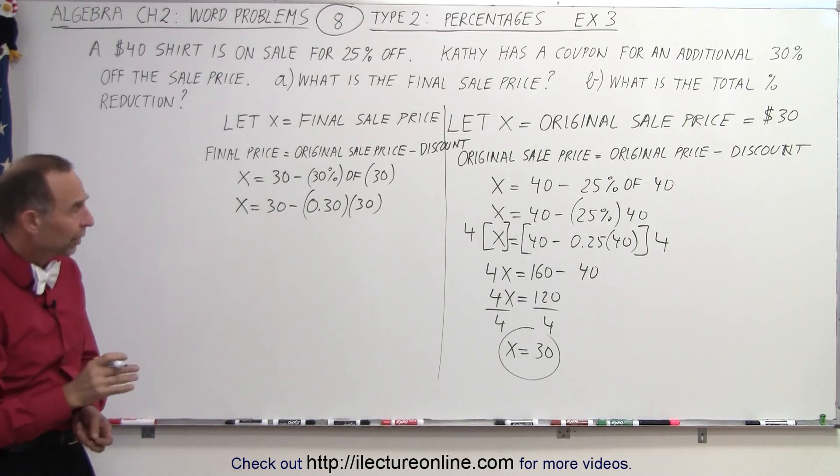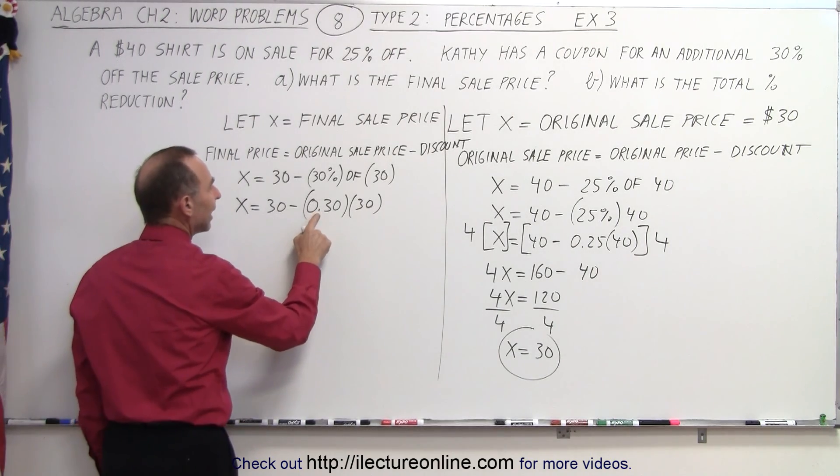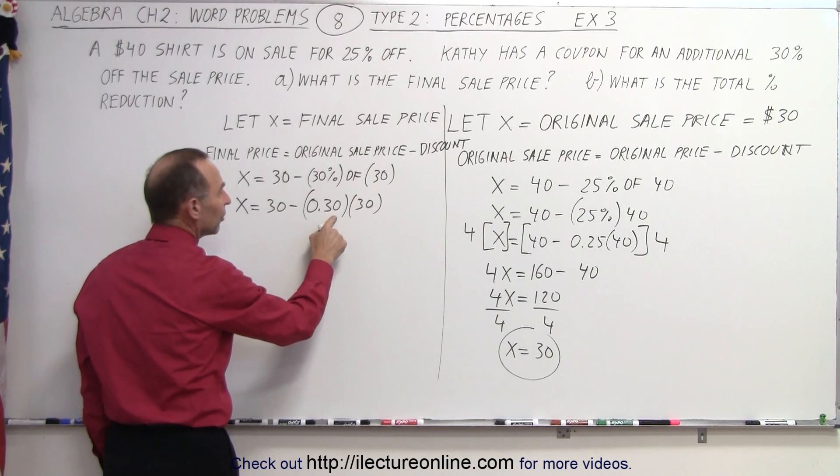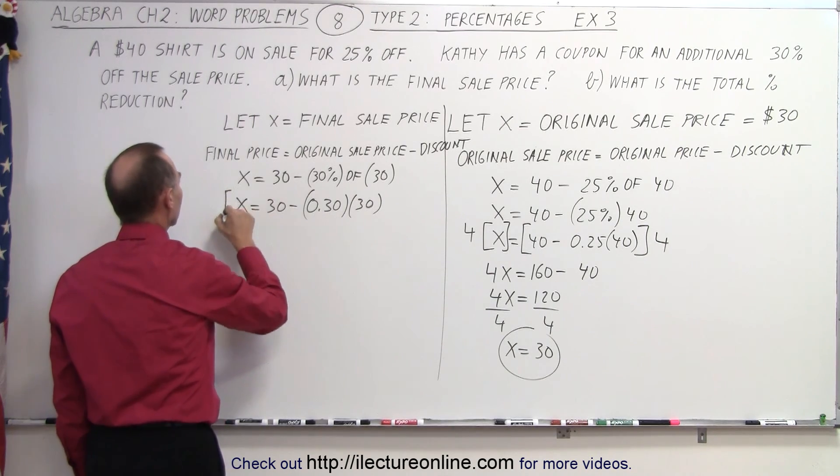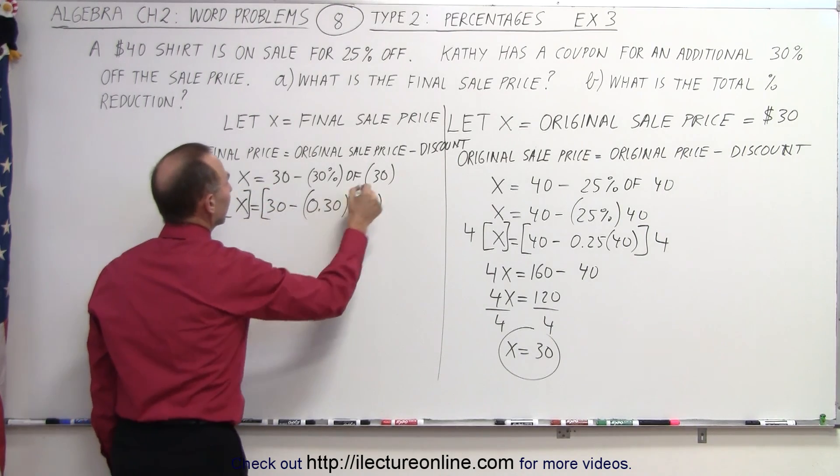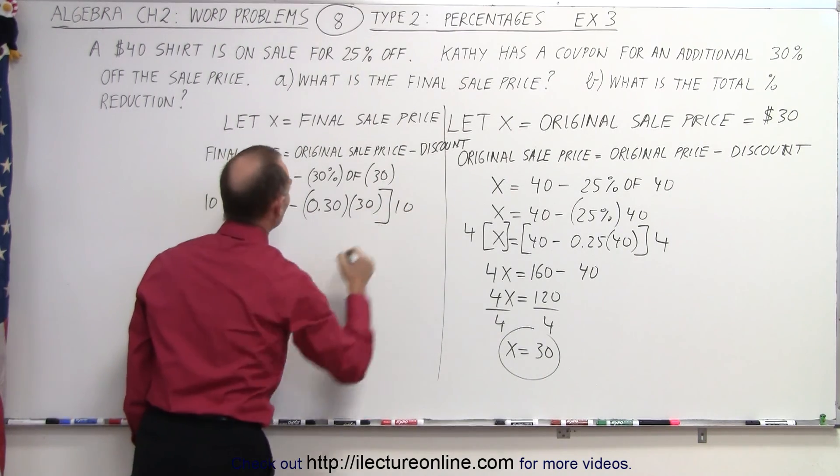So now we want to get rid of the decimal. We can do that by multiplying by 10 because 0.30 is the same as 0.3. So I multiply both sides by 10. I get rid of the decimal.